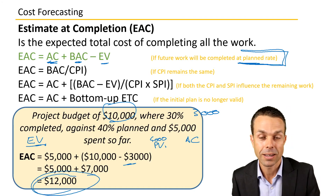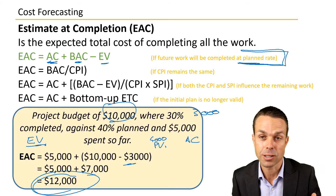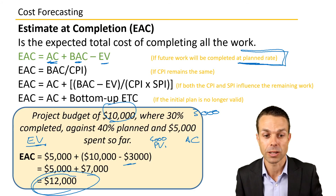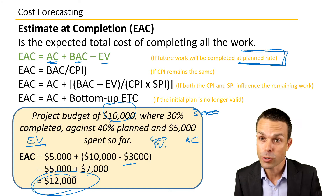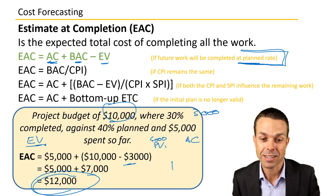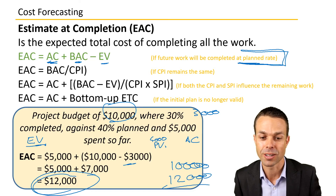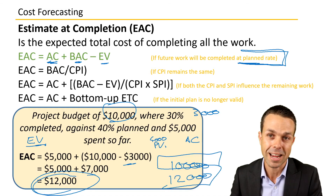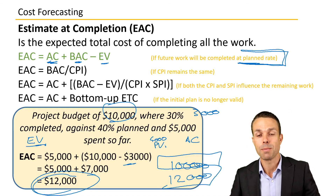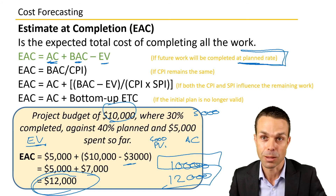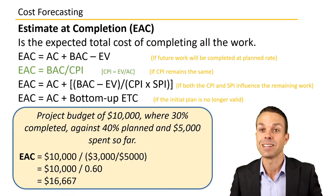That's what we're expecting to pay to complete this project — the estimate at completion, the total amount at completion. Notice that it's different from our original budget: we'd planned $10,000 but now it's going to be $12,000. So we're going to have to adjust — do a change request, get more money, or perhaps use management reserves. Let's look at the next formula: BAC divided by CPI.